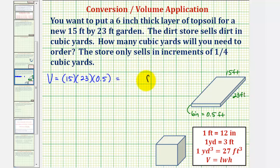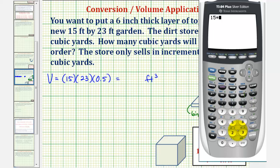This would be cubic feet, and 15 times 23 times 0.5 is equal to 172.5. Again, this is cubic feet.